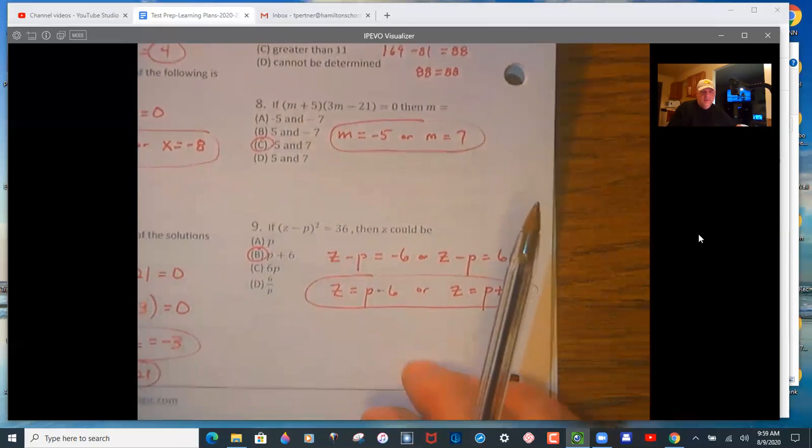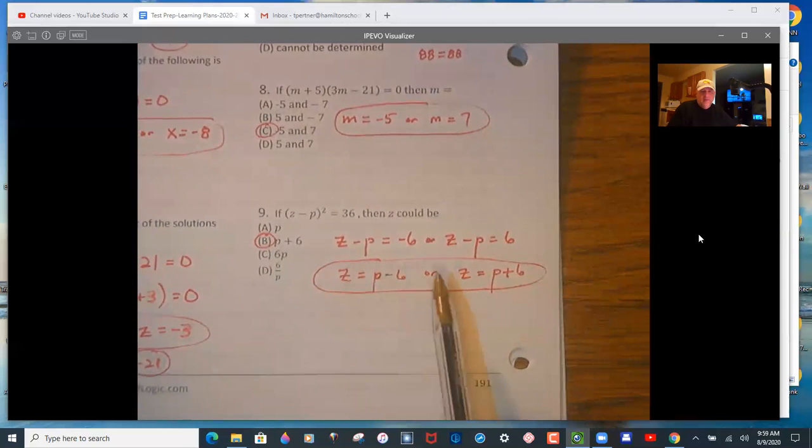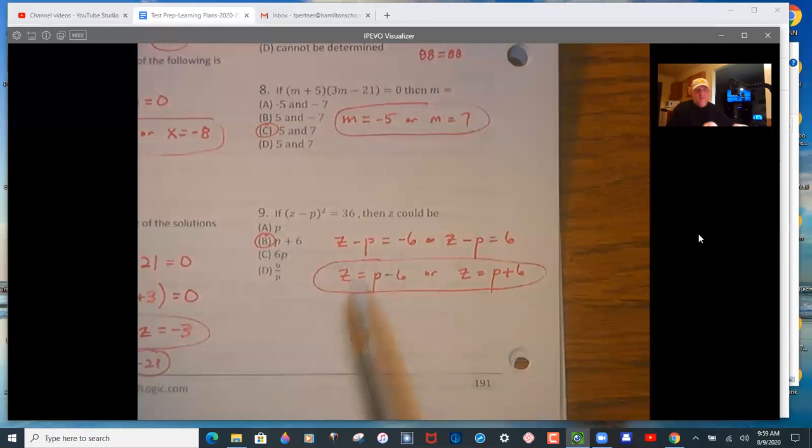Okay, so c is it. Then here another, like completing the square type of problem, except you have one more variable. So add p in both cases. So p minus 6 and p plus 6. So p plus 6 is the one that's given.